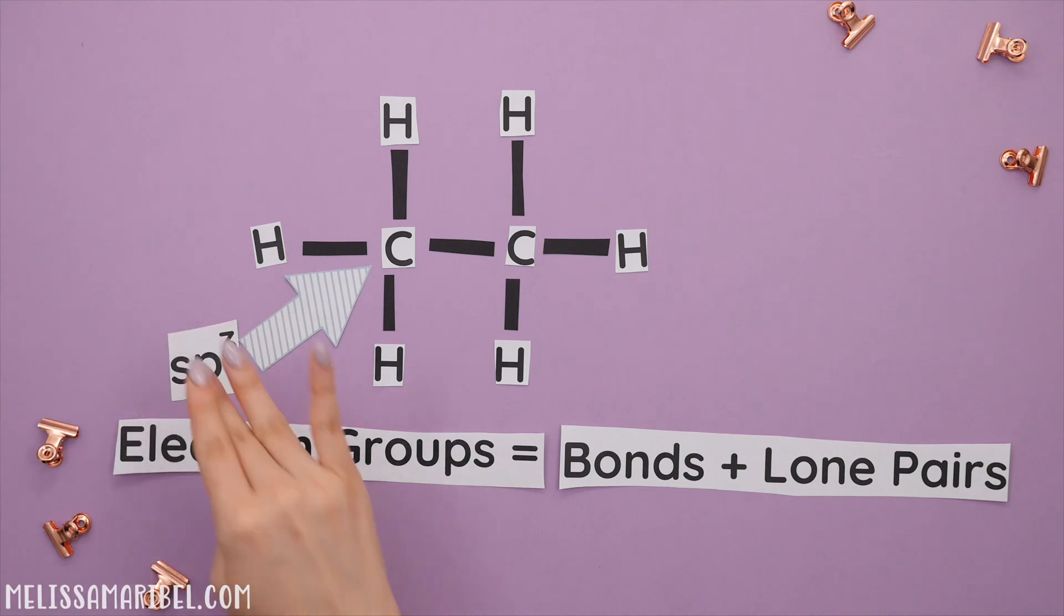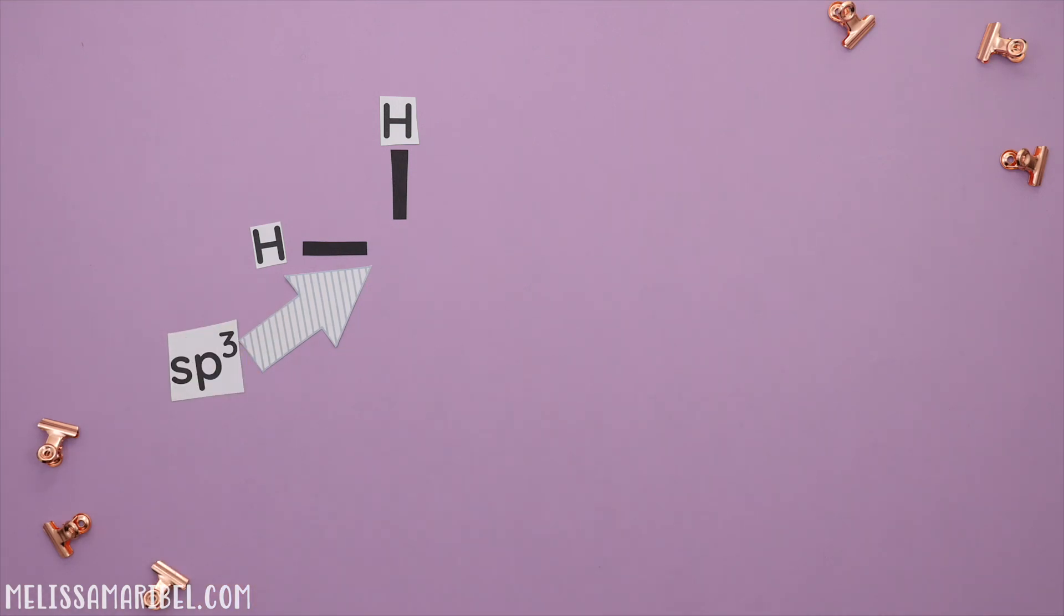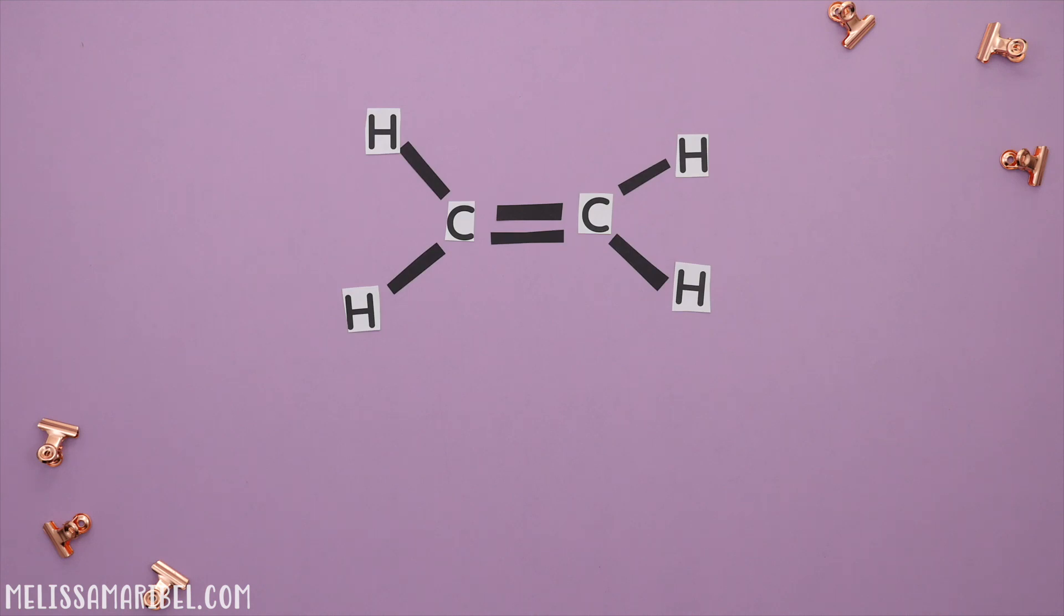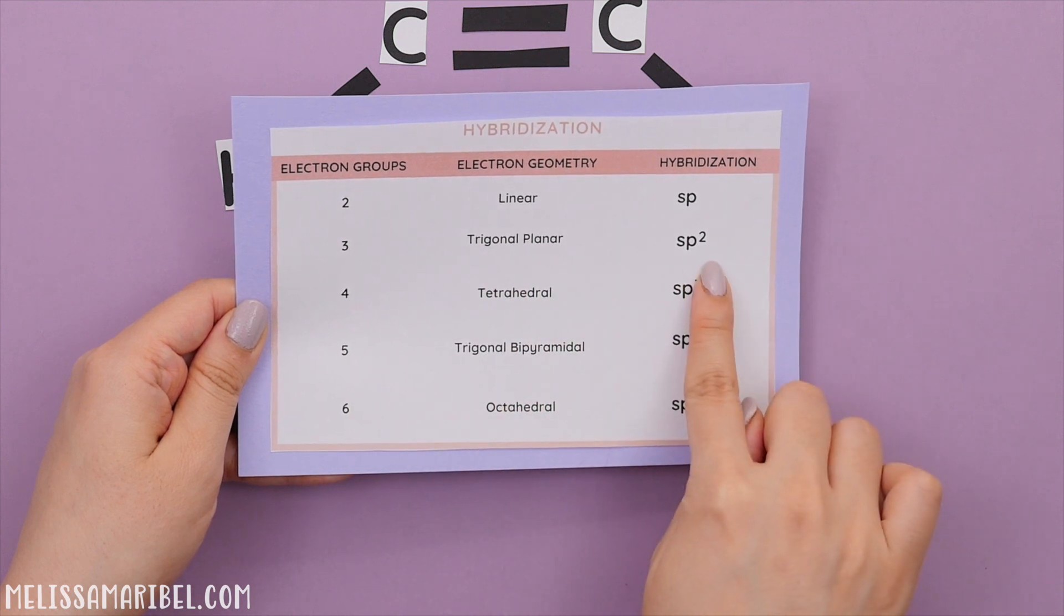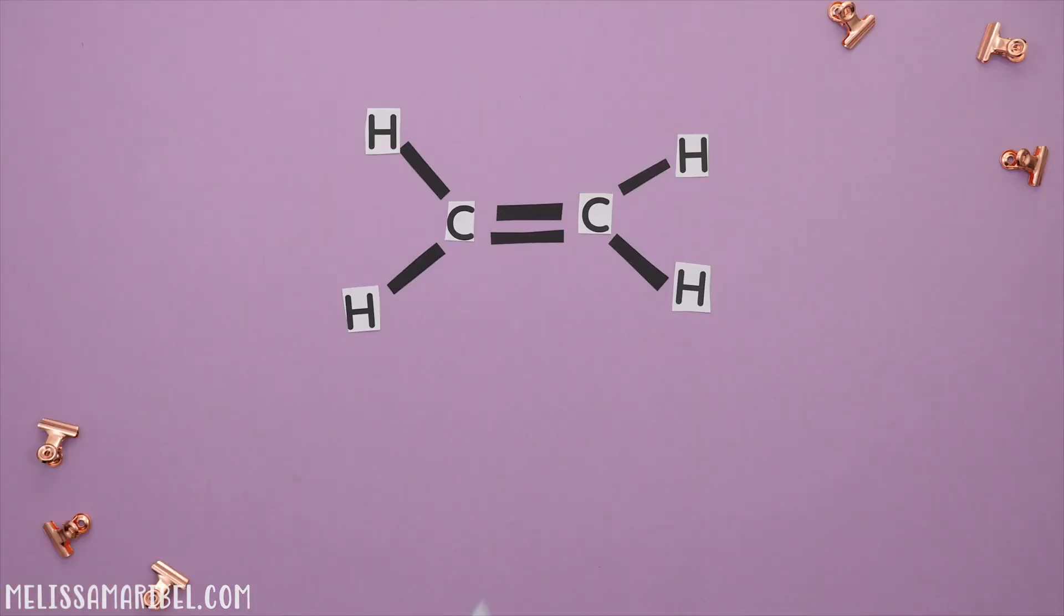Let's find the hybridization of this structure. We'll find the electron groups and note, a double or triple bond only counts as one bond whenever we are finding the electron groups. So this carbon has one, two, three electron groups making it trigonal planar for our electron geometry. And our hybridization for each carbon is then sp2.